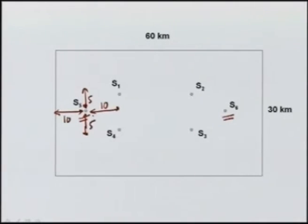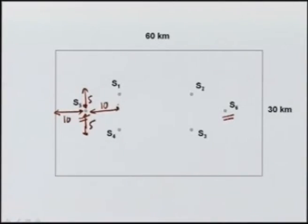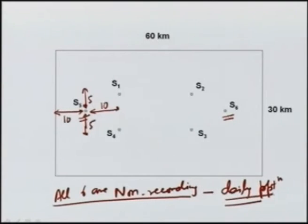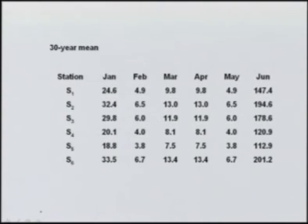So we decide that these 6 rain gauges — S1, S2, S3, S4, S5, and S6 — are sufficient for our required accuracy, and then we will analyze the data at these 6 stations. The values of precipitation at all these stations — we will assume they are all non-recording gauges — so the data which is available is daily data.